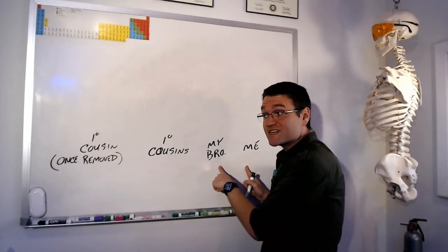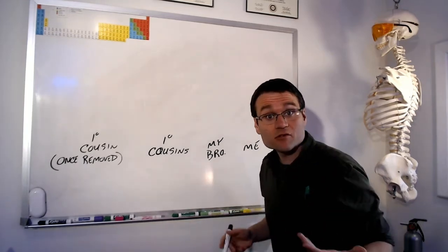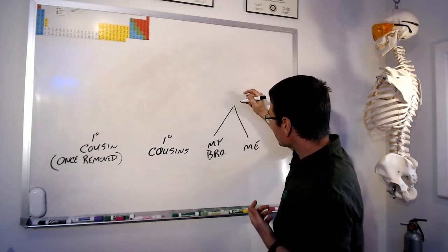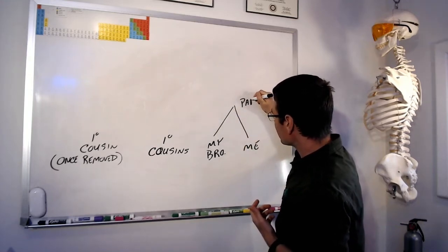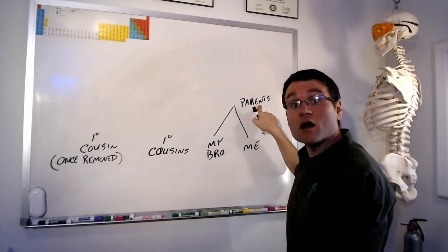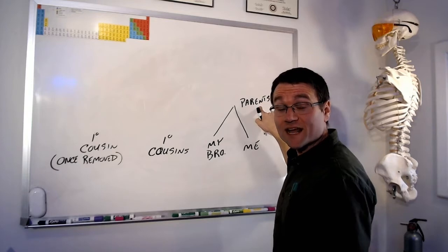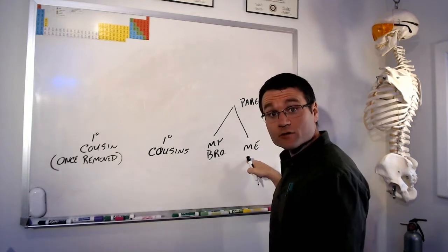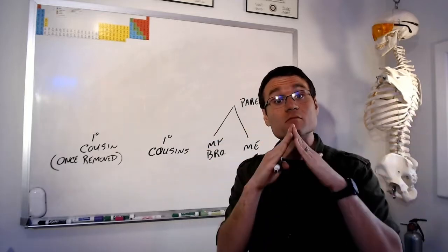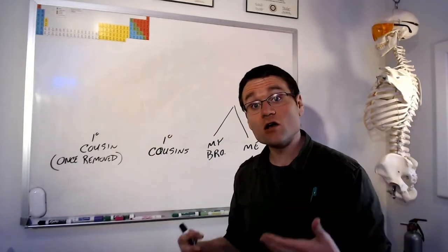If we take this DNA test, we would find that the two most closely related individuals are my brother and I. We have the most similar DNA of anyone in this group. The reason why is our DNA came from the same source — we have the same parents. We share a recent common ancestor, and therefore we have similar DNA. The further back in history two organisms share a common ancestor, the more different they're going to be.